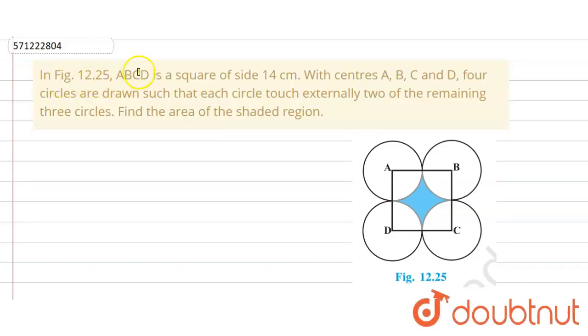In the given question, in figure, ABCD is a square of side 14 centimeter with centers A, B, C and D. Four circles are drawn such that each circle touches externally two of the remaining three circles. So we have to find the area of the shaded region.